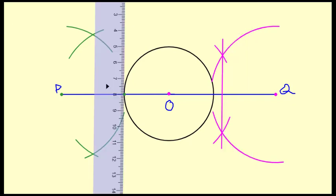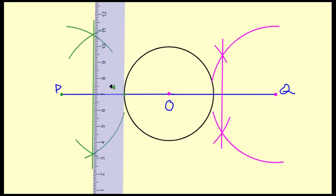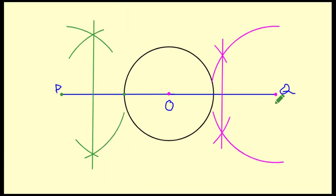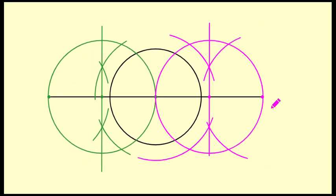These are the perpendicular bisectors. Now we have to draw circles taking the midpoint of OQ as center and the midpoint of OP as center. We have now drawn those circles.